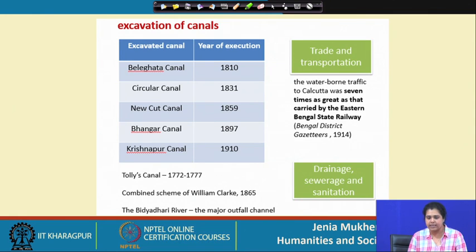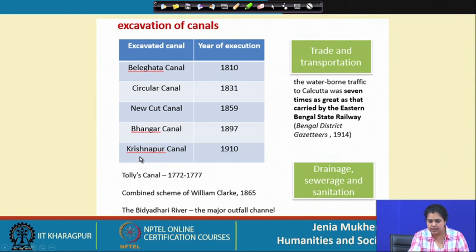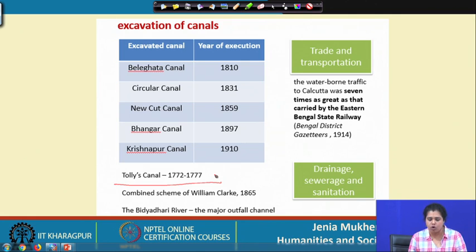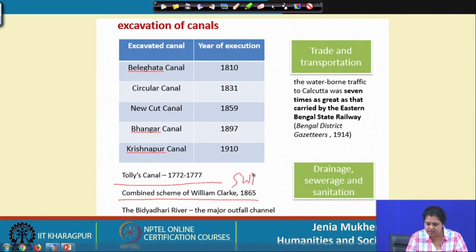It is also connected to the Talis canal, which is very important — the Adi Ganga that we had seen. These five canals plus the Talis canal form part of the eastern canal system. One should also remember it includes the history of what is known as the combined scheme of William Clarke, implemented in 1865, which consists of two canals: the storm water flow canal (SWF) and the dry weather flow canal (DWF).